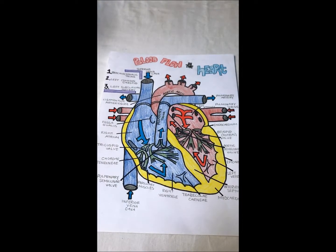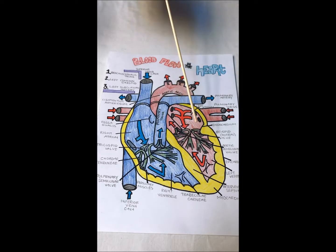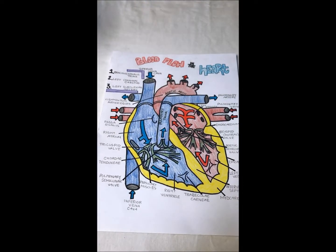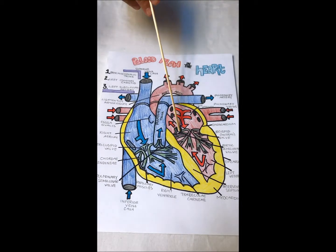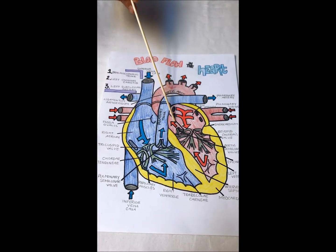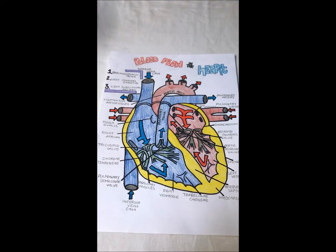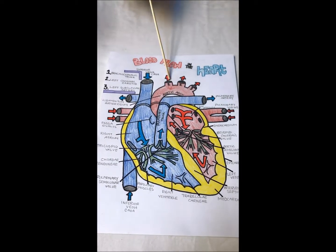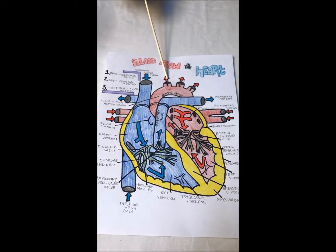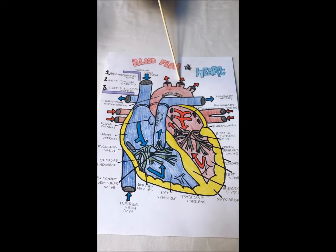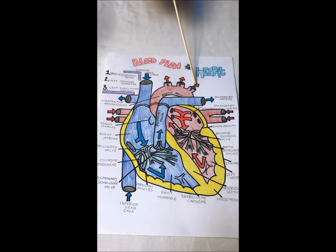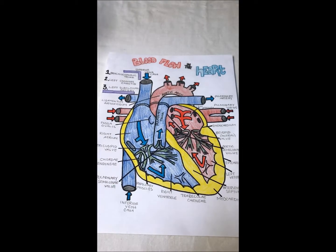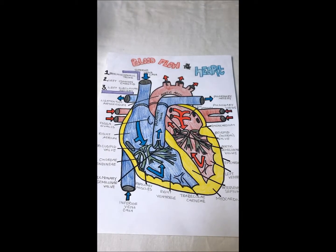The blood then moves through the bicuspid valve and into the left ventricle. After that, it goes through the aortic semilunar valve and into the aorta. The oxygen-rich blood travels out through the brachiocephalic trunk, the left common carotid artery, and the left subclavian artery into the body, where it will be circulated and brought back to the heart where the process will start all over.